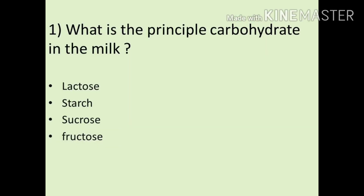The first question is: what is the principal carbohydrate in milk? The options are lactose, starch, sucrose, fructose. The answer is lactose. Lactose is a reducing disaccharide and its monomers are glucose and galactose.